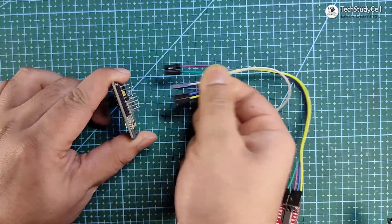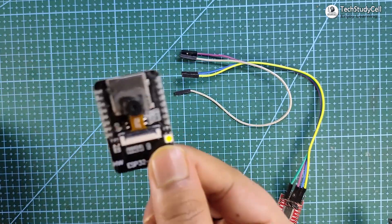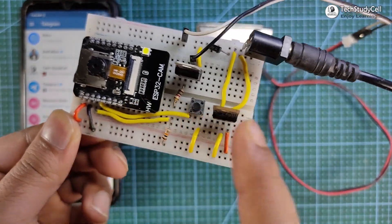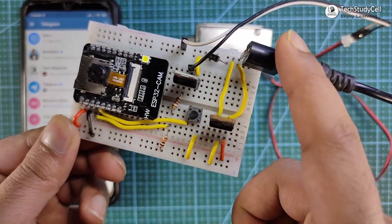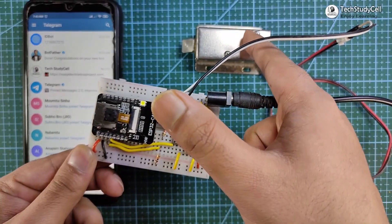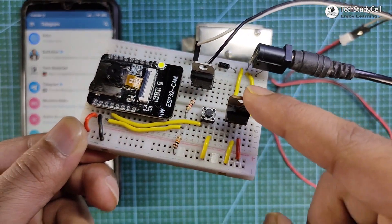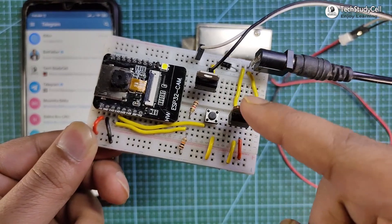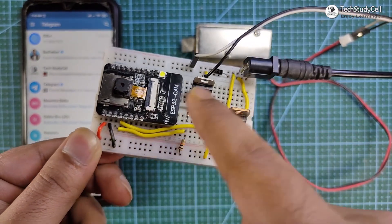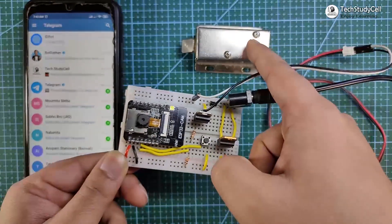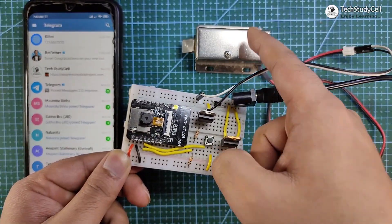Now I will disconnect the ESP32CAM from my laptop and make the circuit for this project. I have given a 12-volt input. This is a 12-volt electronic lock. I have used a 7805 voltage regulator to convert 12V to 5V and feed it to the ESP32CAM, and a TIP122 transistor to control the 12-volt electronic lock.